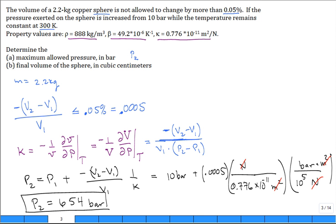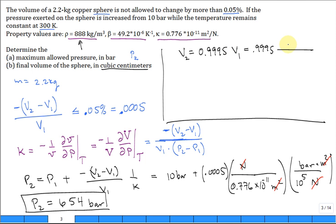Let's look at part B. What is the final volume of the sphere in cubic centimeters? The final volume is 0.9995 times the initial volume. Volume initially is the mass divided by the mass density. Our final volume is 0.9995 times 2.2 kilograms divided by 888 kilograms per meter cubed. Convert 100 centimeters equals a meter.